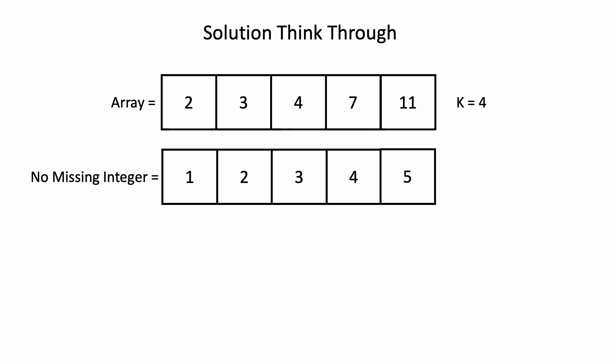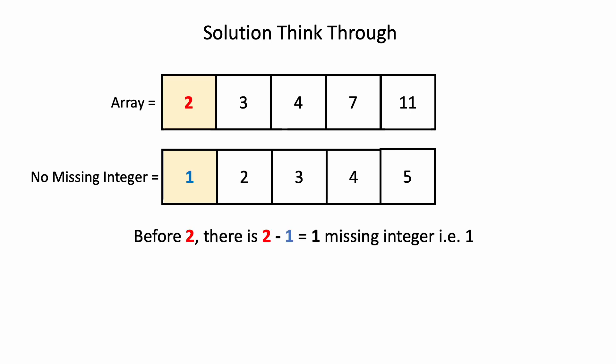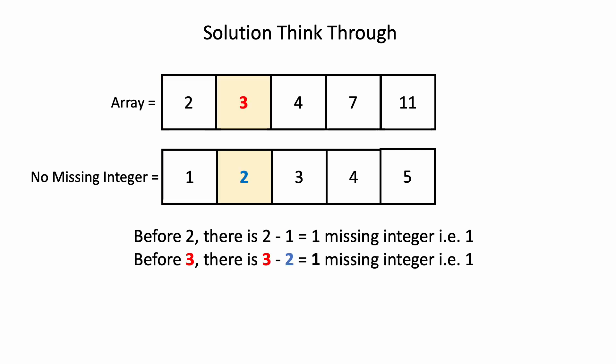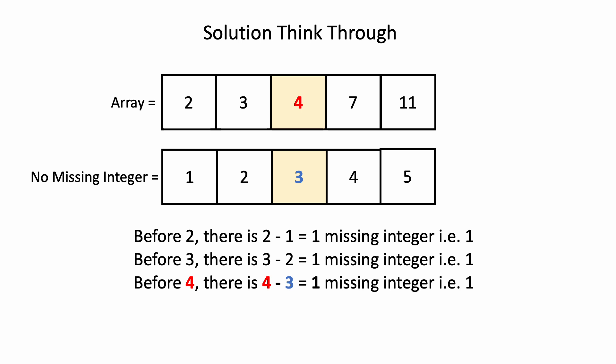To do that, let's compare the input array with a no-missing-integer array. By comparing, we can say that before element 2, there is 1 missing integer which is integer 1. Similarly, before 3 there is 1 missing integer, and before 4 there is 1 missing integer.